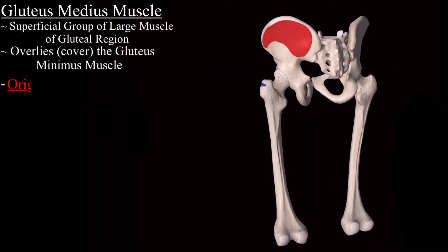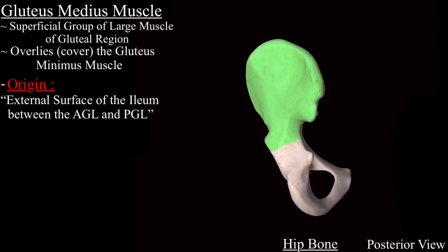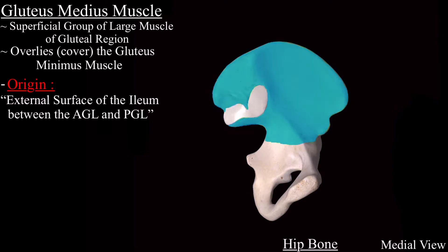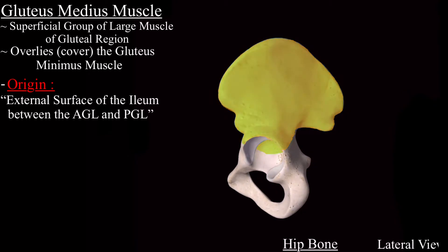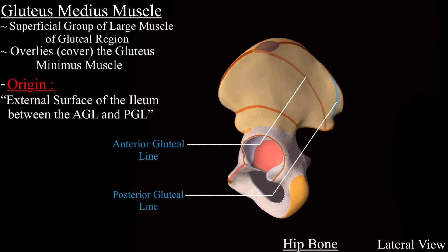The gluteus medius muscle originates from the external surface of the ileum, between the anterior gluteal line and the posterior gluteal line. This is an isolated hip bone — the highlighted green is the ileum part of the hip bone. This is the internal surface, and this is the external surface of the ileum bone. On the external surface, this is the anterior gluteal line and this is the posterior gluteal line, and between these two lines on the external surface of the ileum, the gluteus medius muscle originates.